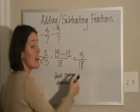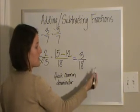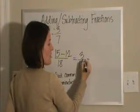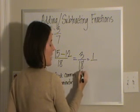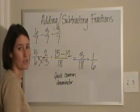This is not a simplified fraction. I know that 3 will divide into 18. So I say 3 divided by 3 is 1. And 18 divided by 3 is 6. 1 sixth is my final answer.